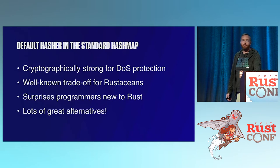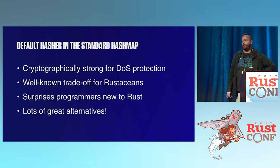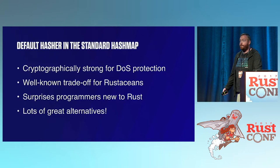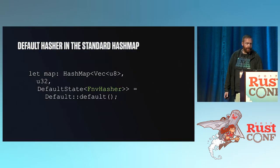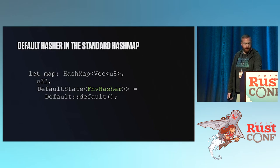Something that pretty much everyone in this room is familiar with: the default hasher is cryptographically strong, so it can be a little slow. It's a well-known trade-off to experienced Rust programmers, but really surprising to brand-new ones. The nice thing is there are lots of great alternatives for using different hashers, and there are good pages with Rust-specific benchmarks for them. Here's an example using an FNV hash — there are no reasons to show the slow version, so I'm showing what it's like to make a slightly faster one. It depends entirely on your use case.